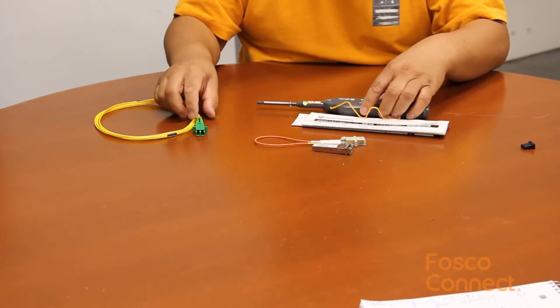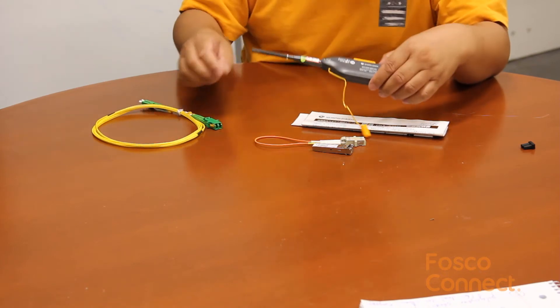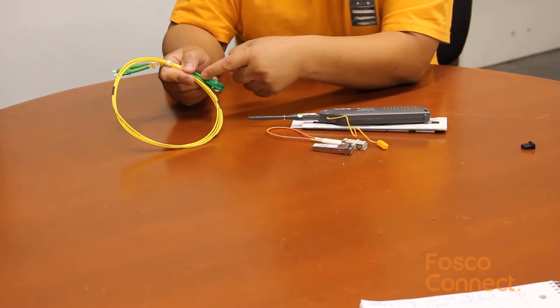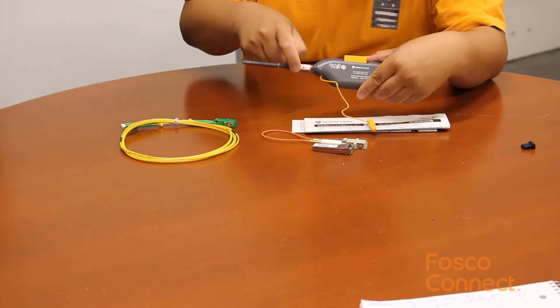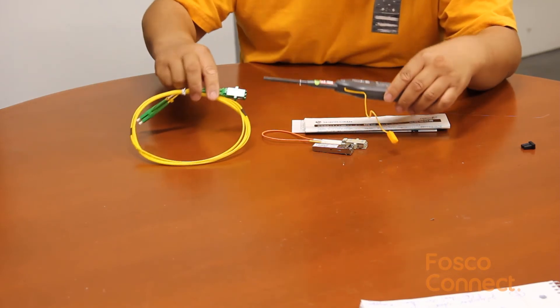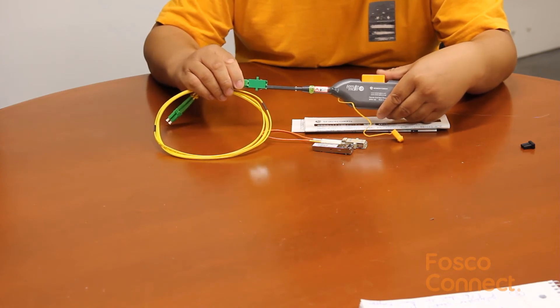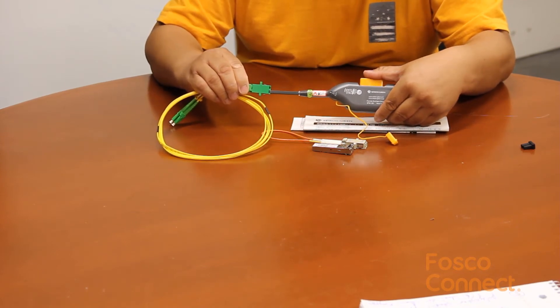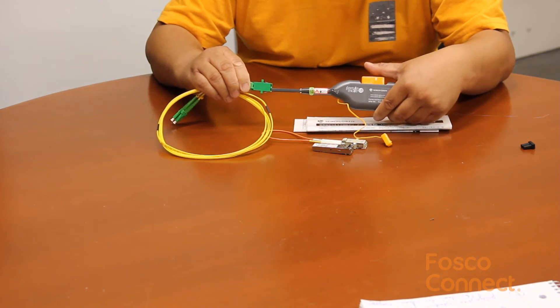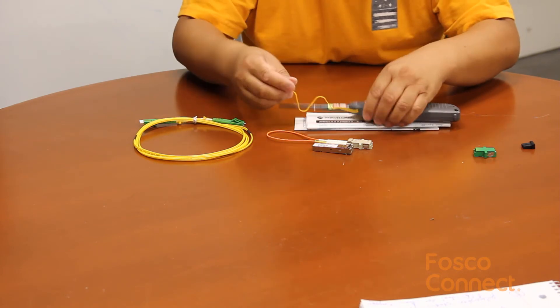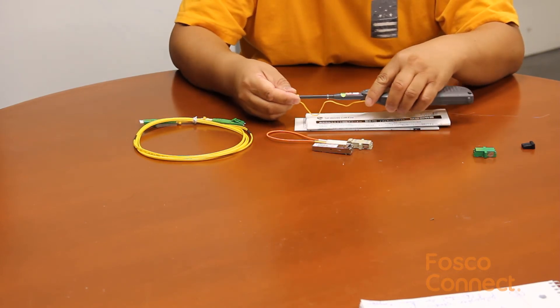and also LC APC angle polish connectors, but you need to pay attention to the alignment of the positions. Align the LC APC connector's key with the APC key position label on the dry cleaner. This works the same way if cleaning LC APC connectors directly outside of a bulk kit adapter.